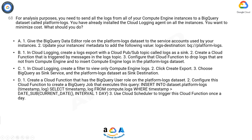Option D: 1. Create a Cloud Function that has the BigQuery User role on the Platform Logs dataset. 2. Configure this Cloud Function to create a BigQuery job that executes this query: INSERT INTO dataset Platform Logs (Timestamp, Log) SELECT Timestamp, Log FROM compute.Logs WHERE timestamp > DATE_SUB(CURRENT_DATE, INTERVAL 1 DAY). 3. Use Cloud Scheduler to trigger this Cloud Function once a day. Now take 10 seconds to think about the answer.